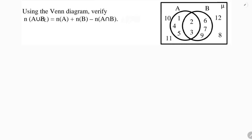Using the Venn diagram, verify that n(A∪B) = n(A) + n(B) - n(A∩B). First, write the elements of A, B, A∪B, and A∩B.